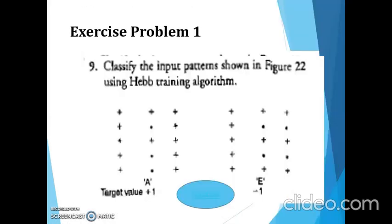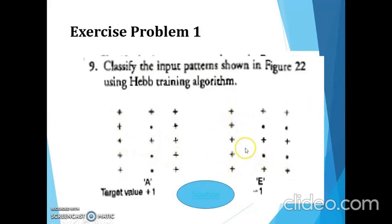This is an exercise problem — you can try it on your own. This is letter 'a' and this is letter 'e'. One is the positive sample (+1) and the other is the negative sample (-1). You can solve this problem using the same Hebb network.